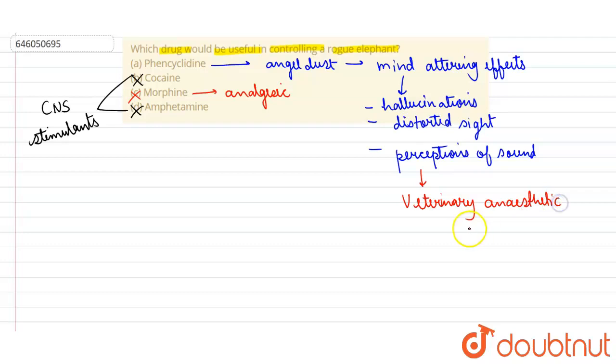It causes hallucinations and sleepiness in the body. It has sedative effects as well and therefore induces sleep. If it has been given to a rogue elephant, that will cause sleep and help control that rogue elephant. So option A is correct here. Thank you.